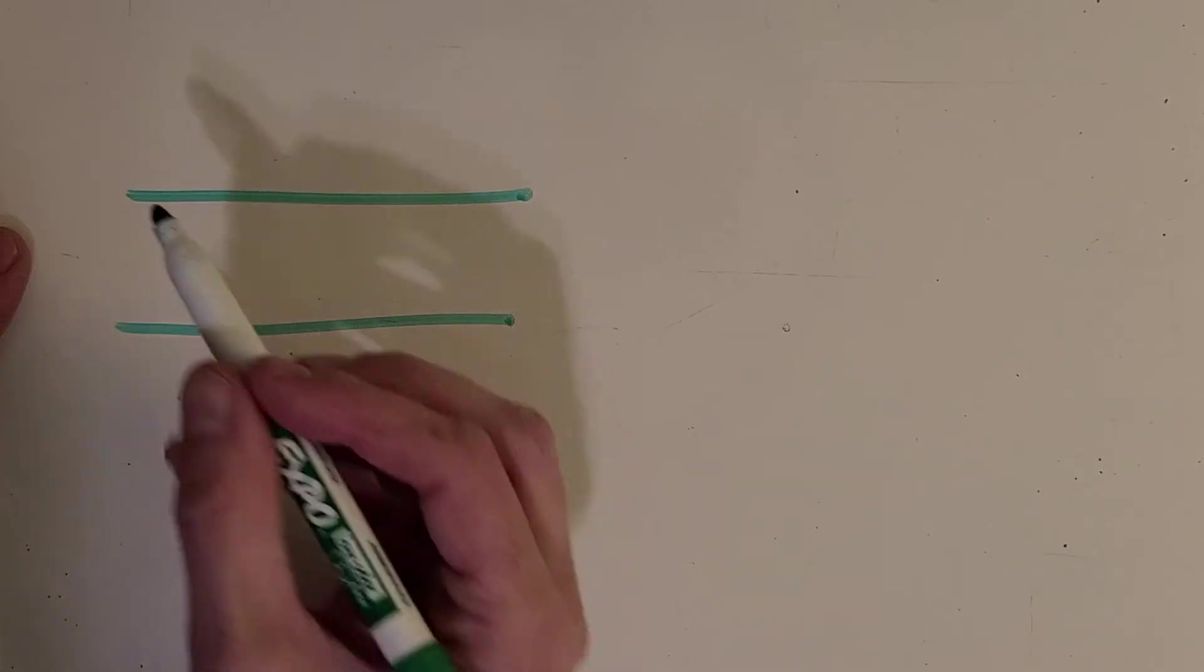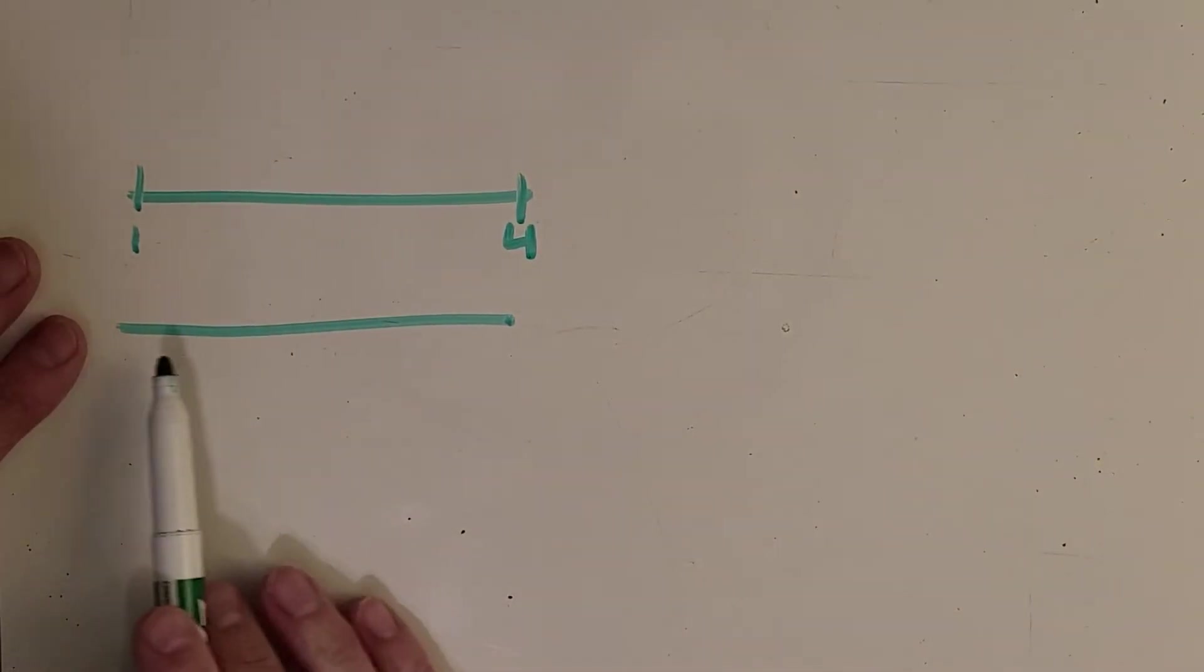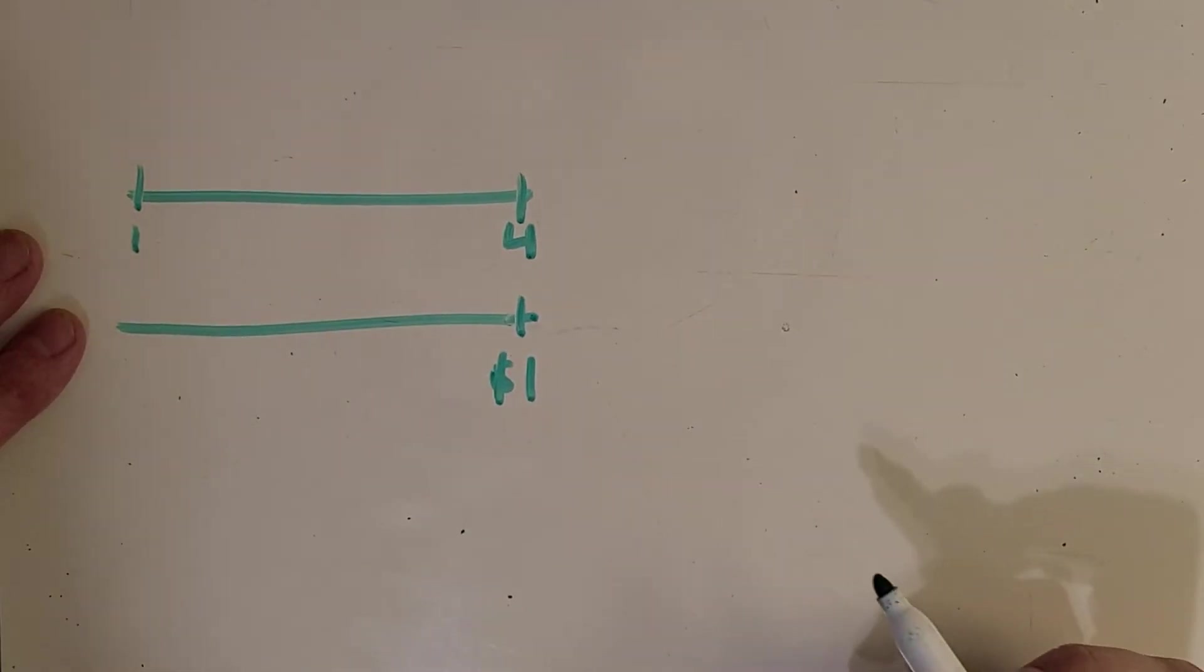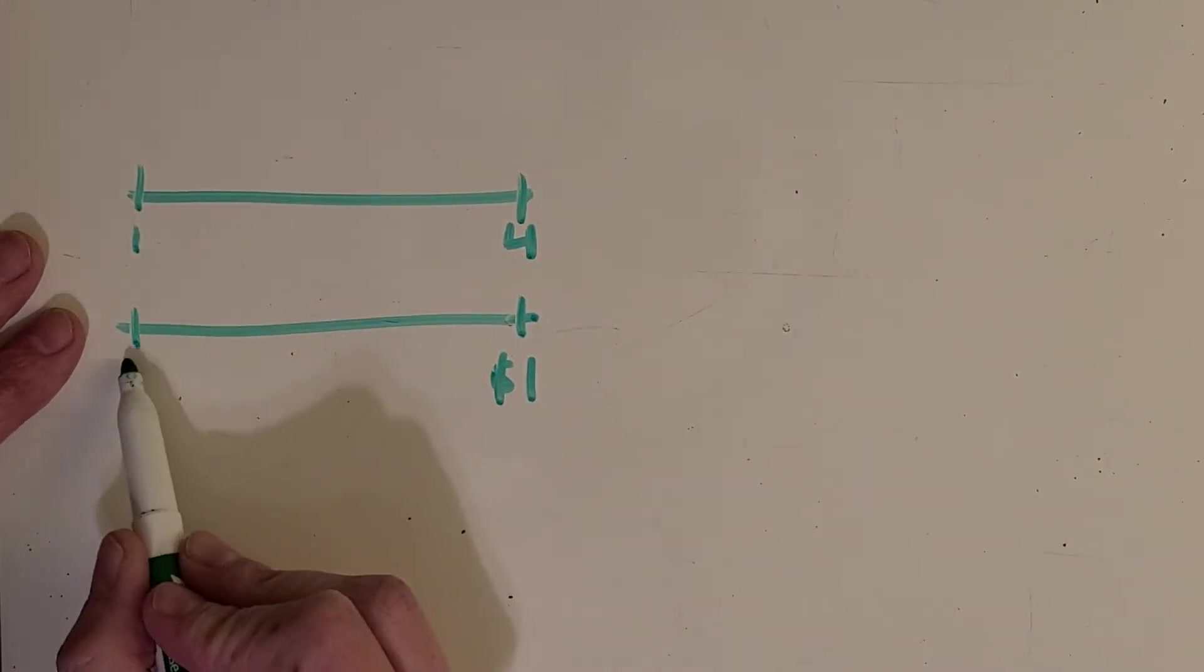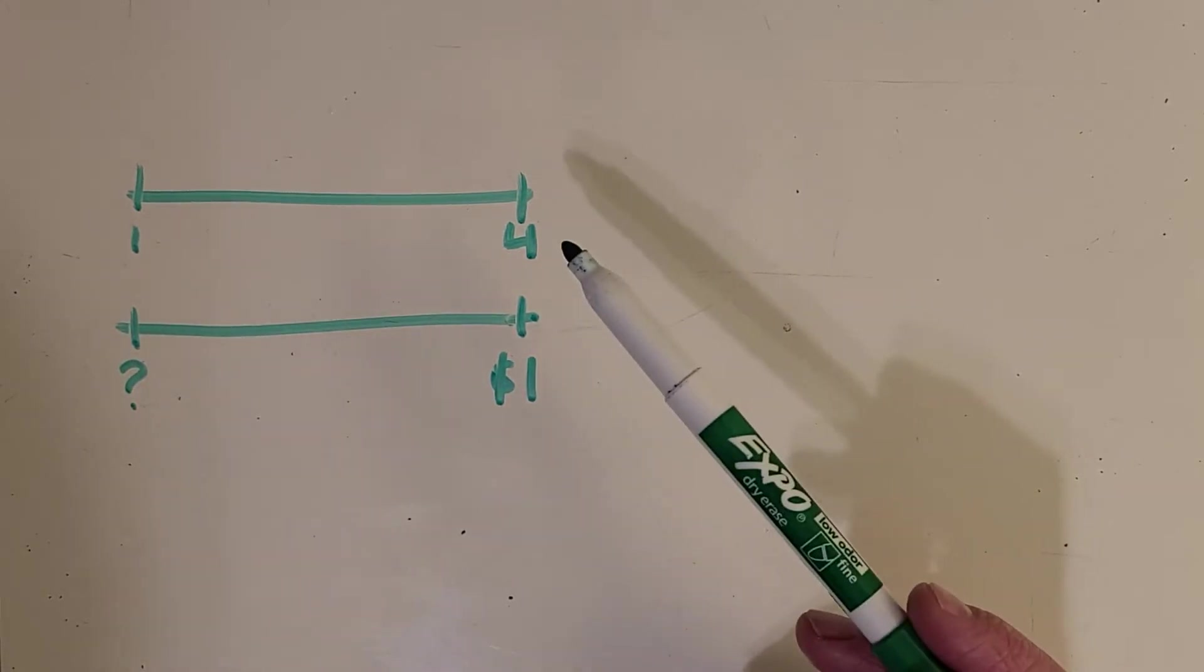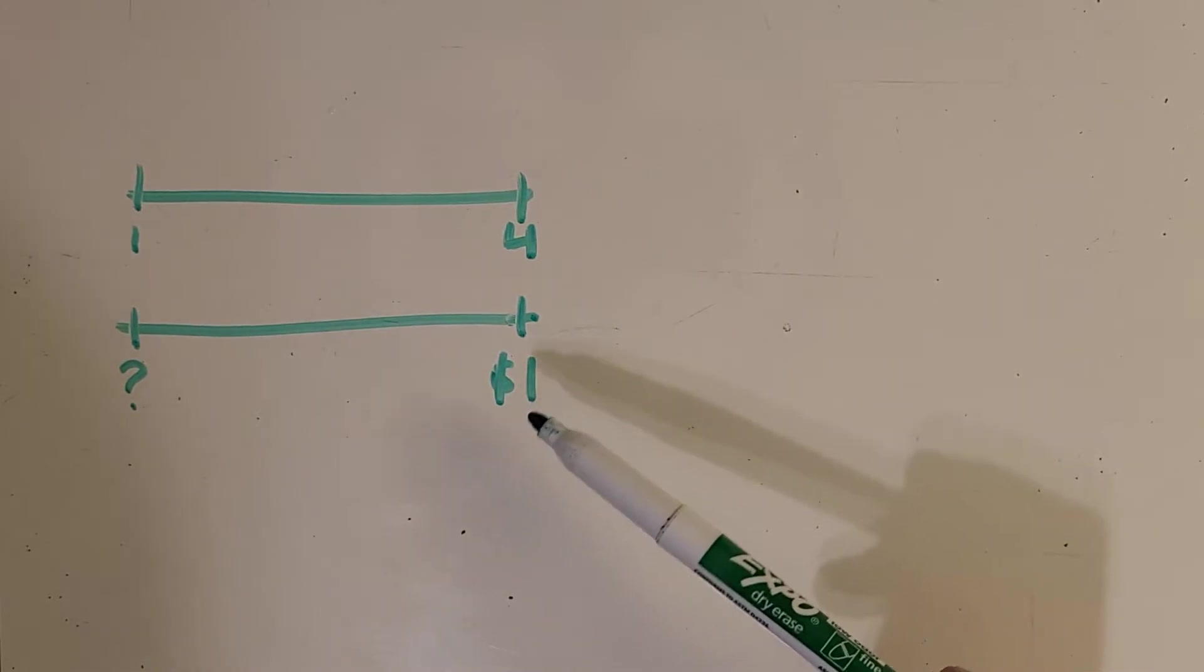Okay so first we're gonna look at a double number line for our lemons problem that are four for a dollar. And so with my top number line I like to just put one lemon here, four lemons here. And then I'm showing down here the price. So those four lemons are one dollar. And then here is where I'm wanting to fill in. So now I'm just thinking of how to cut this one dollar up into four groups.